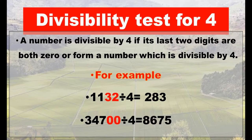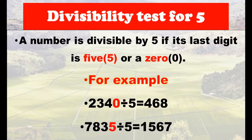In our second example, 34,700 divided by 4 equals 8,675. This number has two zeros at the end, which means that according to our rule, this number is also divisible by four.